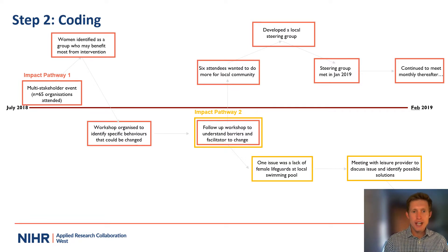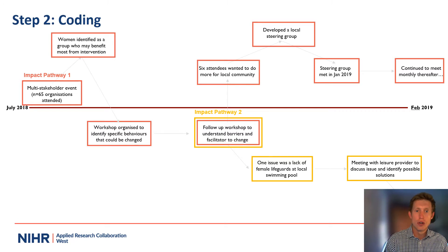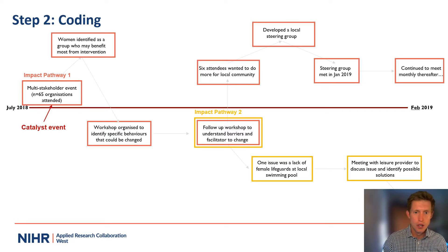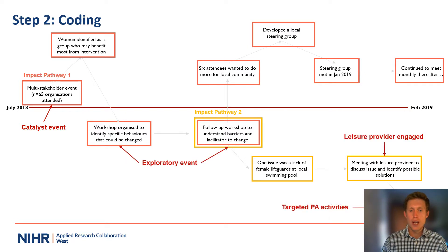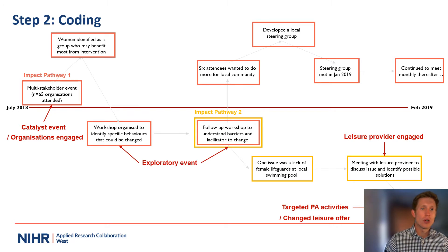If you're new to coding, there might be some additional resources or training materials that we can point you towards. Back to the coding of the ripple effect mapping outputs — we don't have to code everything that sits within them. The idea is that we use a set of codes to describe what's going on. For example, we might code a multi-stakeholder event as a catalyst event, or code behaviour change workshops as exploratory events. We can also apply more than one code to the information within one box, as you can see in the bottom right-hand corner.